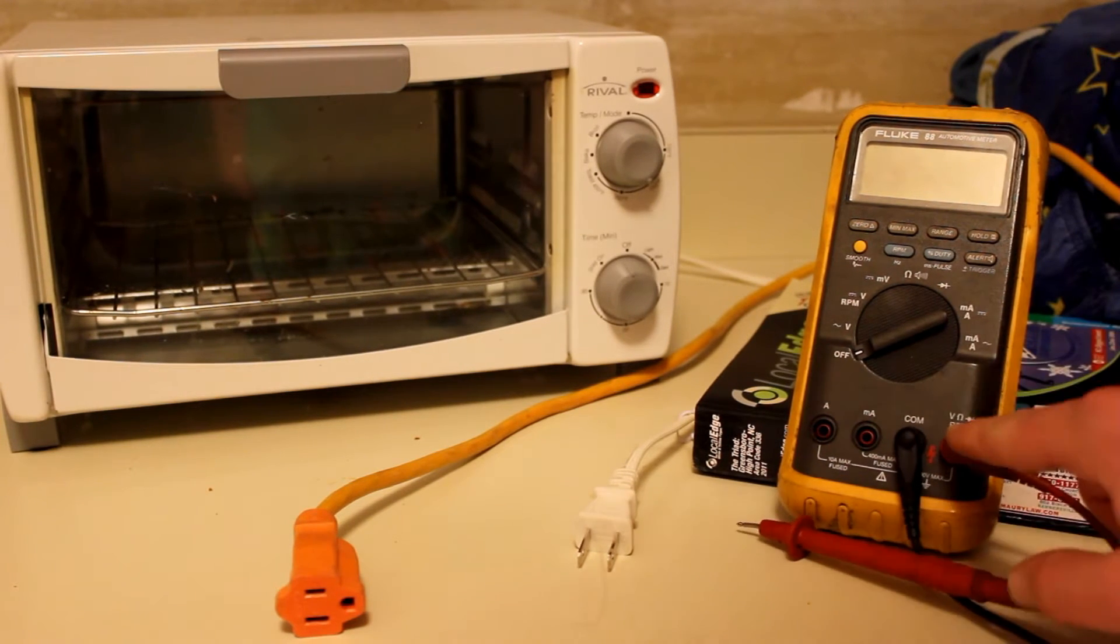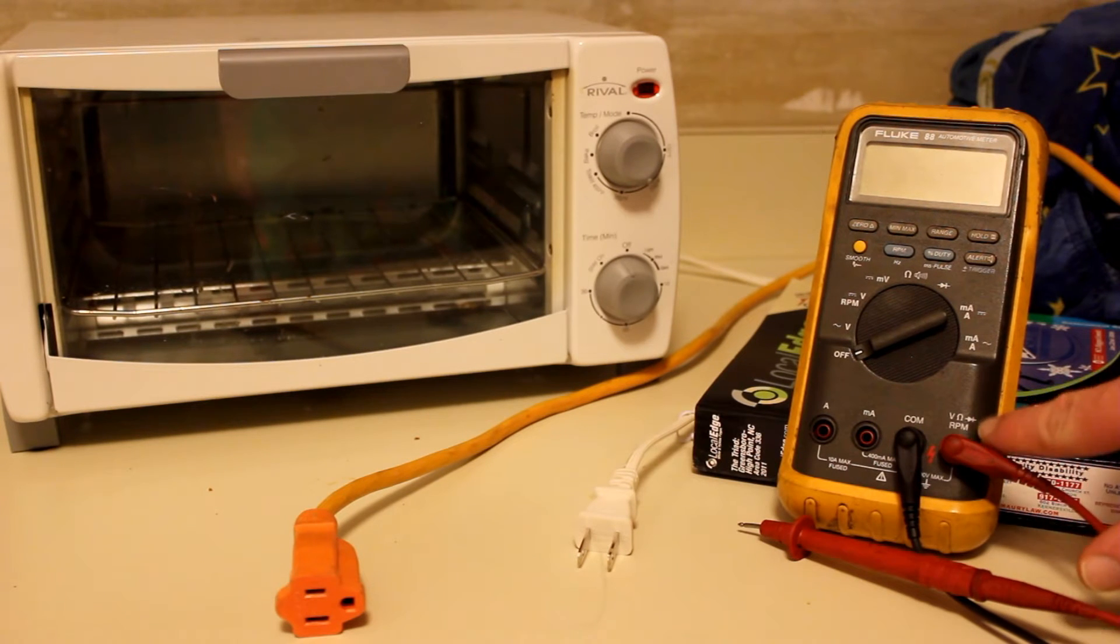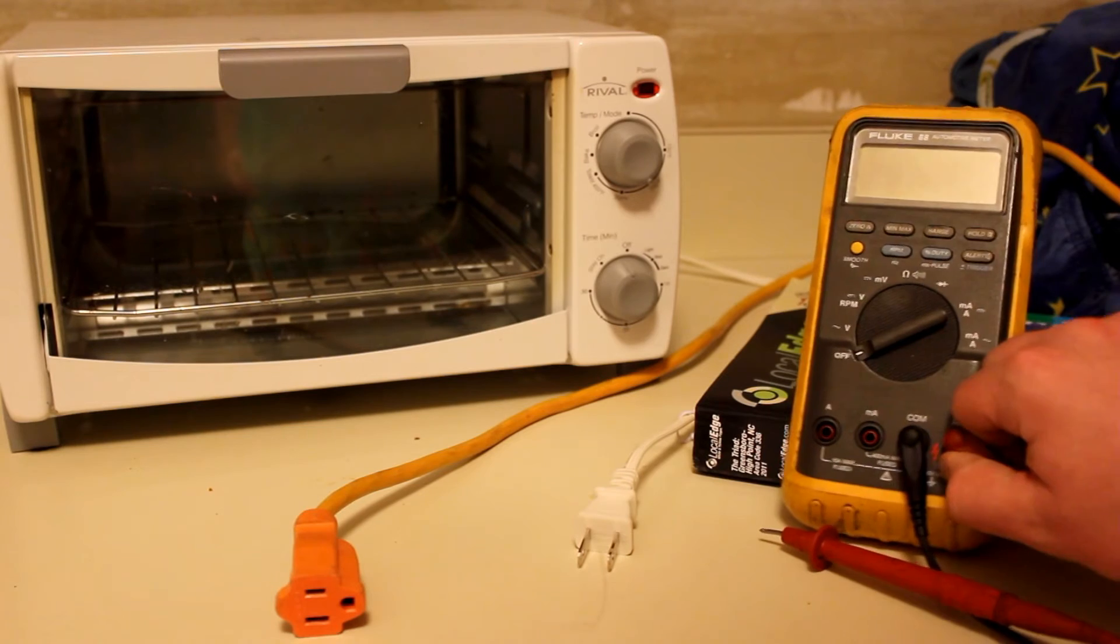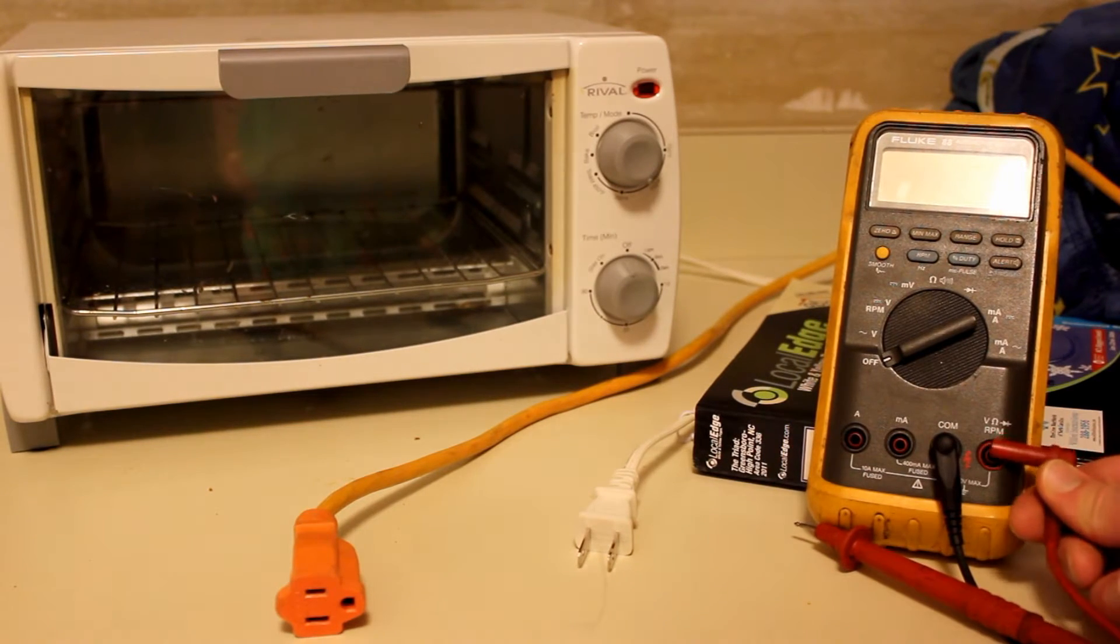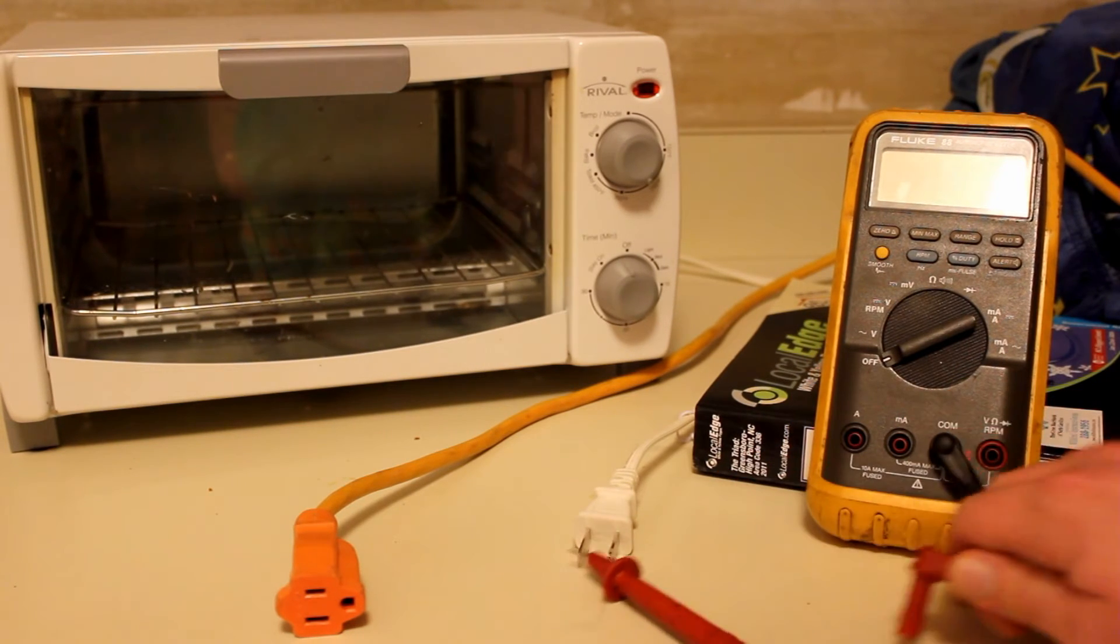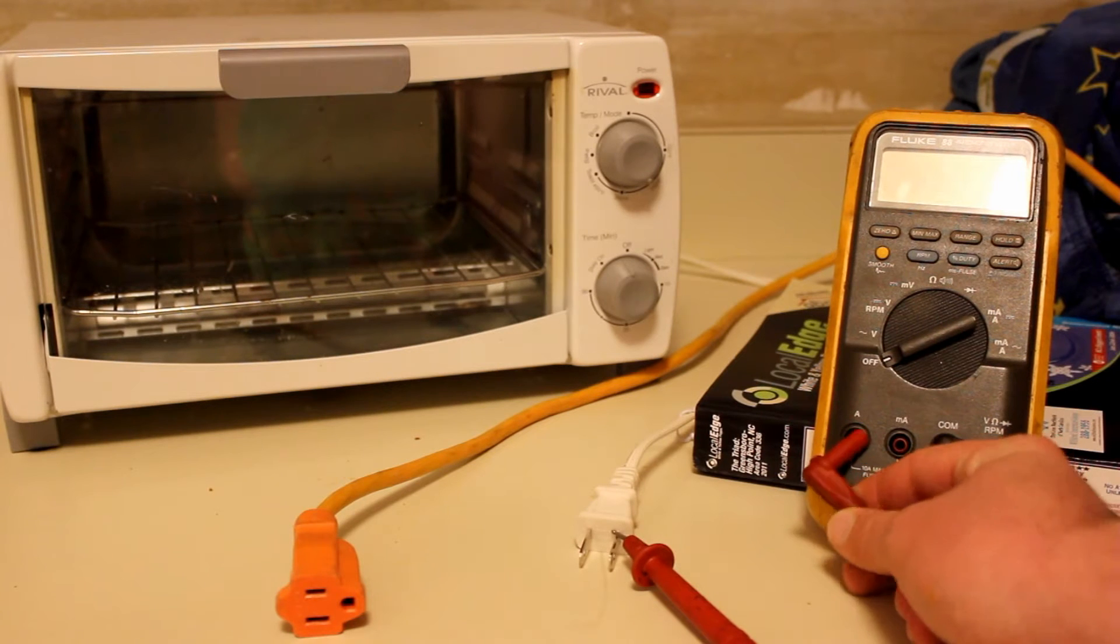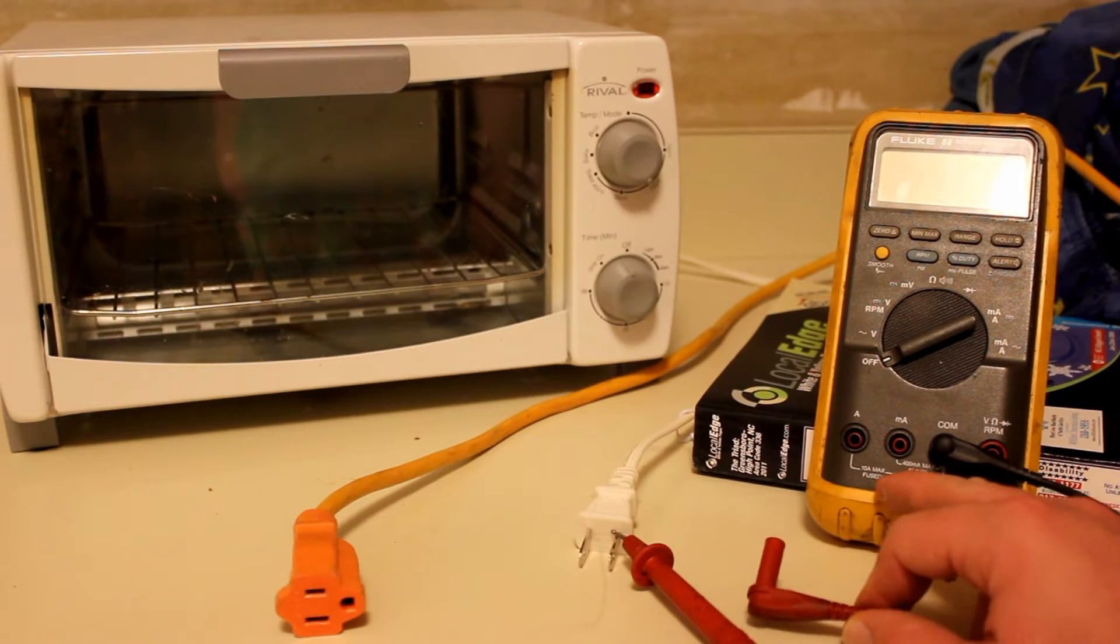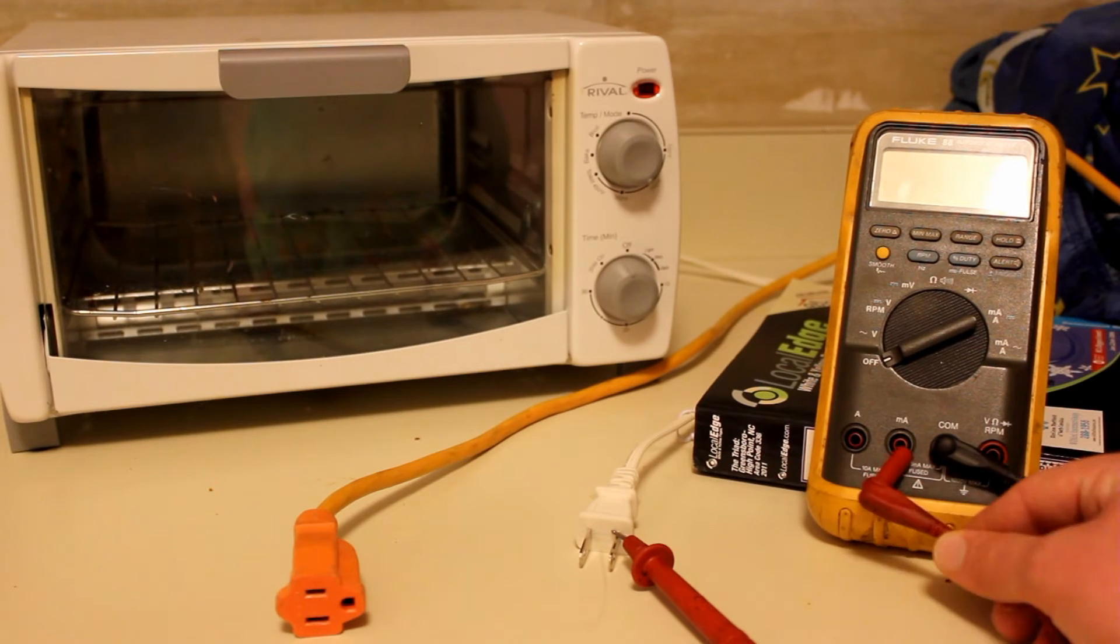So right now I'm in volt and resistance mode. You can see right here it's got the little horseshoe and then the V, so that means that I'm in volt and resistance mode. And if I switch it over here, right here would be amps mode, and that would be for doing 10 amps max.